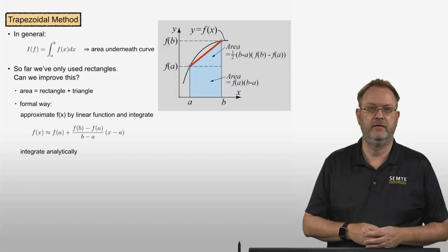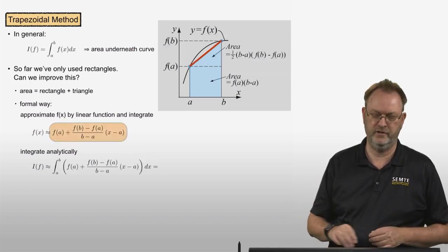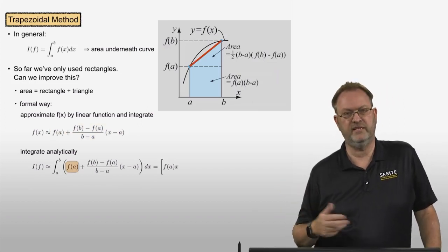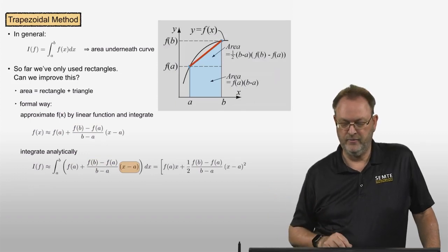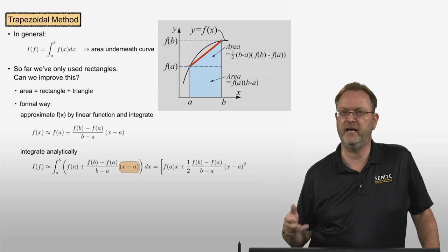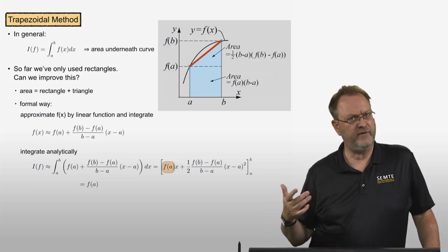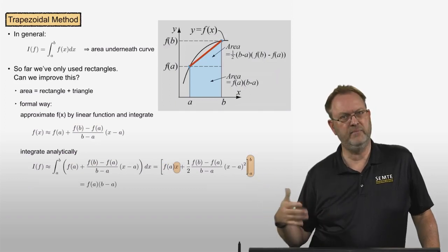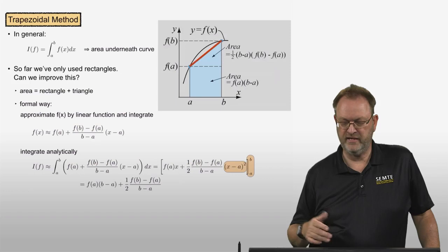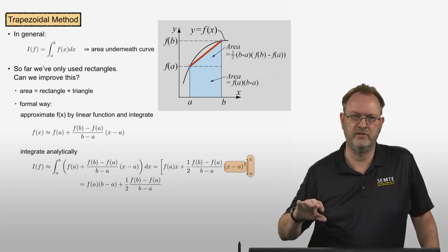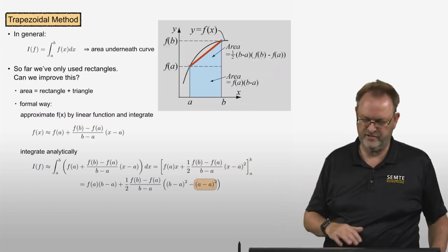Integrating this analytically from a to b: integrating f(a) (a constant) gives f(a)·x; integrating the slope term gives one-half times (f(b)-f(a))/(b-a) times (x-a)². Evaluating between the bounds a and b: the f(a) term gives f(a)·(b-a). For the second term, (b-a)² minus (a-a)² leaves (b-a)², and (b-a)²/(b-a) simplifies to (b-a), so that term becomes one-half·(f(b)-f(a))·(b-a).